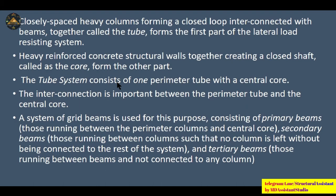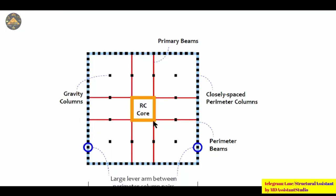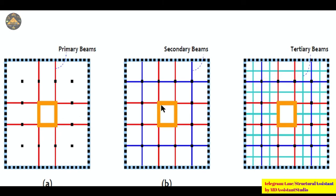Heavy reinforced concrete structural walls forming a core constitute the other part of the lateral load resisting system. The tube system consists of one perimeter tube with a central core. The interconnection between the perimeter tube and central core is important, achieved using a system of grid beams consisting of primary, secondary, and tertiary beams. The inner RCC structural wall system is surrounded by the outer tube system, with gravity columns in between not designed to resist lateral forces.